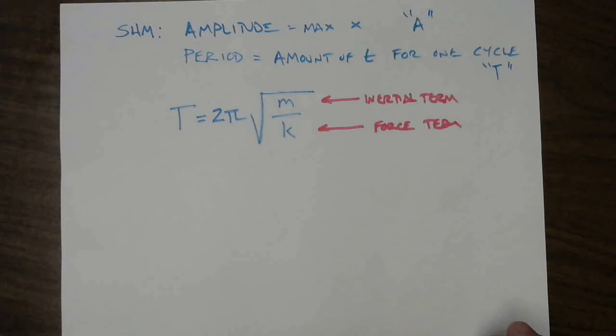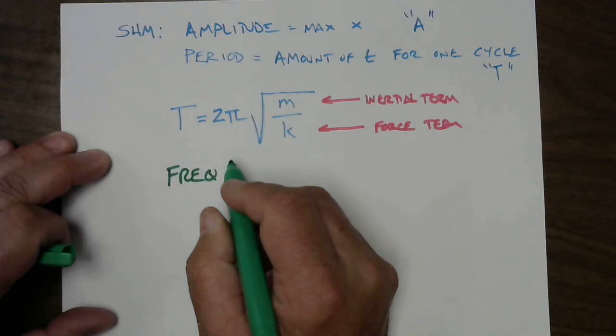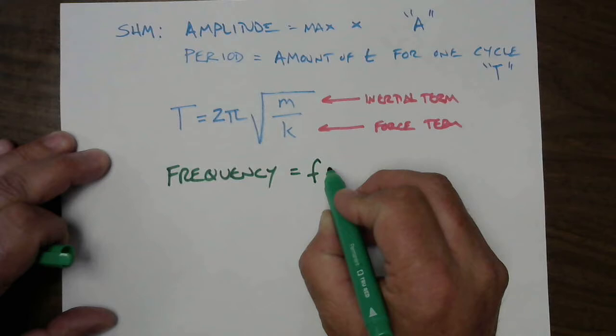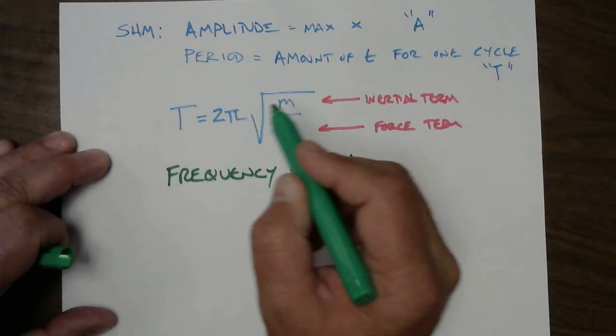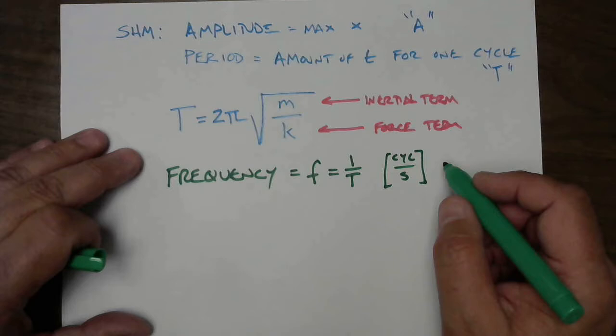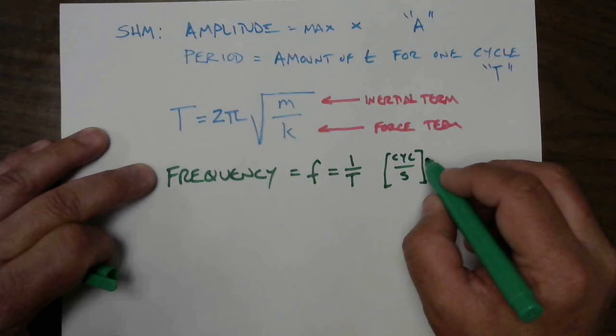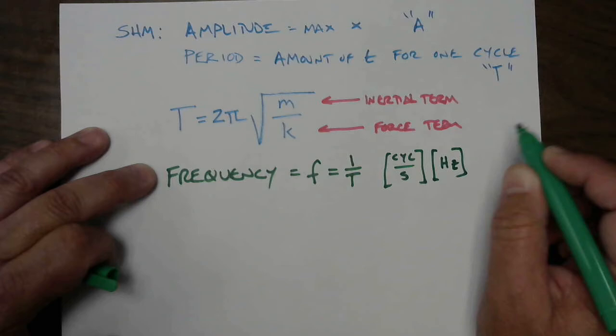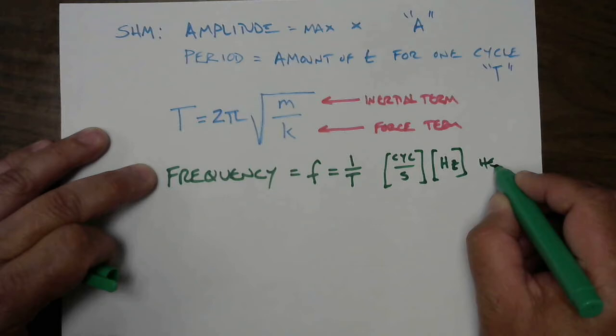There is another concept called frequency, which is used when things happen quickly. Frequency is abbreviated with the letter f, and it is simply the inverse of the period. Whereas period is the number of seconds for one cycle, frequency is the number of cycles per second. That oscillator inside your quartz watch has a frequency of, I think, 11,500 cycles per second. Cycles per second are often abbreviated with another term: Hz, which stands for Hertz.